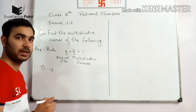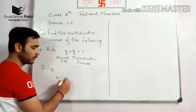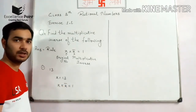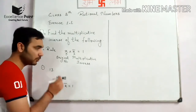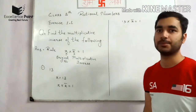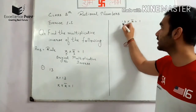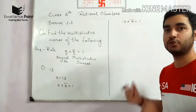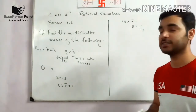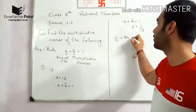Let us consider the first number is 13, so x is equal to 13. When x is multiplied by x-bar, the result should be 1. Putting the value of x: 13 multiplied by x-bar equals 1. Since 13 is on the multiply side, when it changes side it comes into divide. So x-bar will be equal to 1 upon 13.